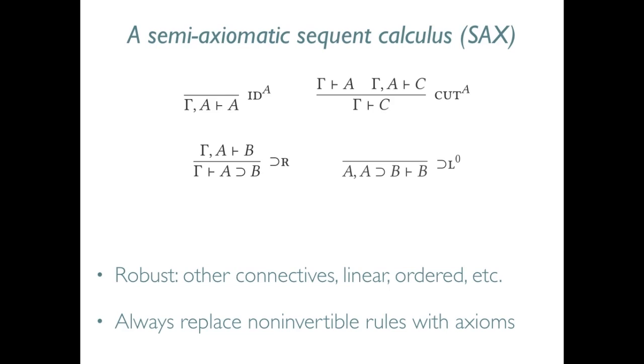For instance, to derive the semi-axiomatic treatment of conjunction, we take its usual sequent calculus rules and replace the non-invertible rule, the right rule in this case, with an axiom.